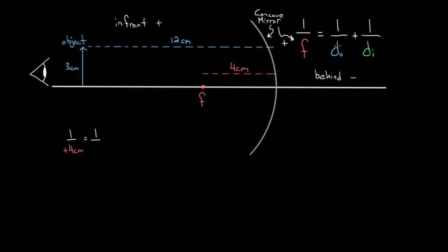We set that equal to one over the object distance. Just one other note: sometimes instead of D-O you'll see S-O for object distance, or D-I and S-I for image distance — it's the same thing, just a different letter. The object distance is on the front side of the mirror, so it's going to be positive 12 centimeters, since the object is located 12 centimeters from the center of the mirror.